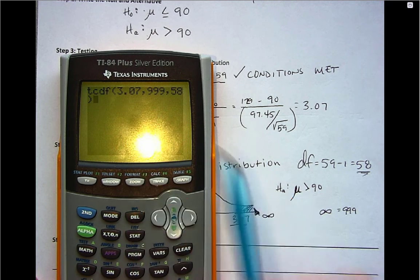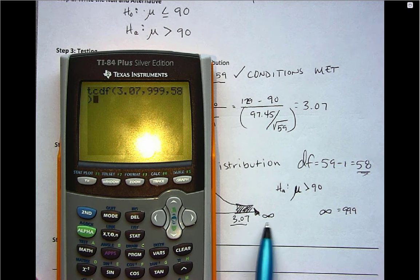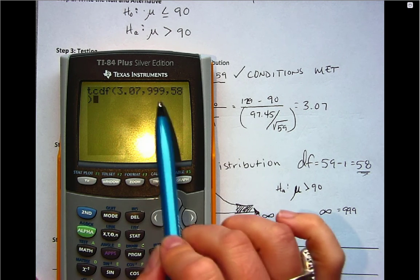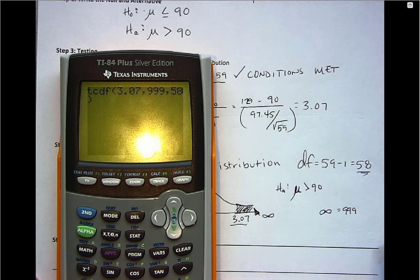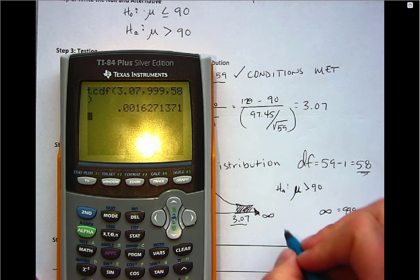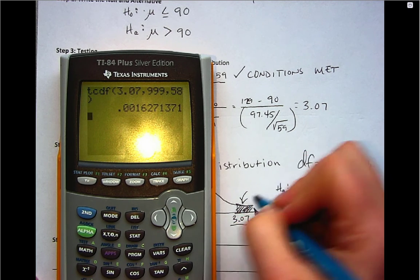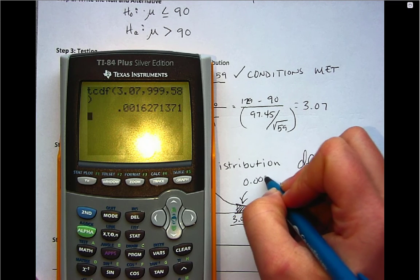And then it finally wants degrees of freedom. So we have 3.07 where the highlighting starts, where it ends at 999 to infinity, and then degrees of freedom. So our p-value, this highlighted area, is 0.002.